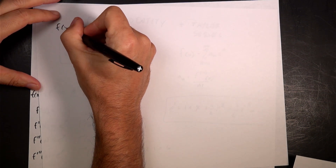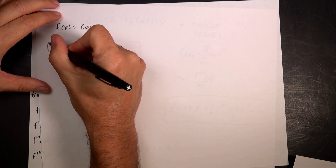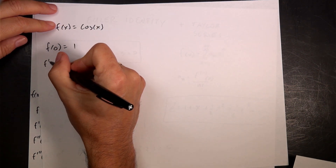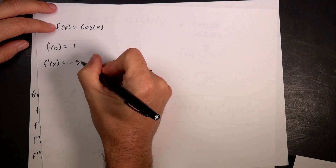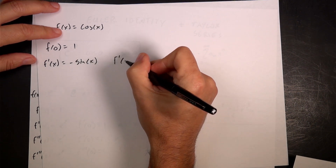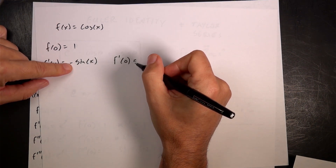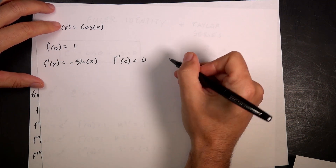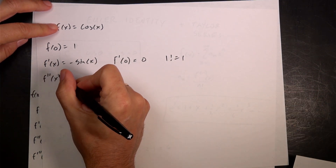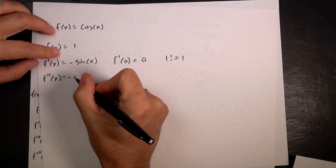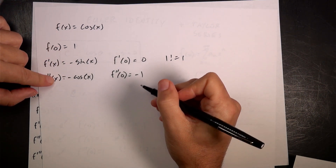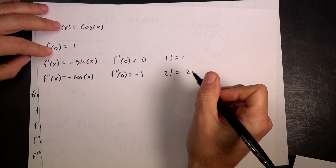f of zero is cosine of zero, which is one. f prime of x is negative sine of x, and the derivative of x is just one, so f prime of zero equals negative sine of zero, which is zero — so it's negative zero. One factorial is one, but it doesn't really matter. f double prime of x is negative cosine of x, so f double prime of zero is negative one, and two factorial is two, so I divide that by two.